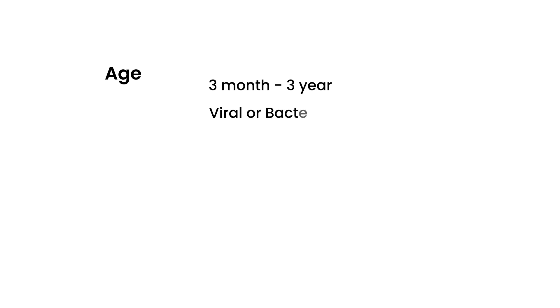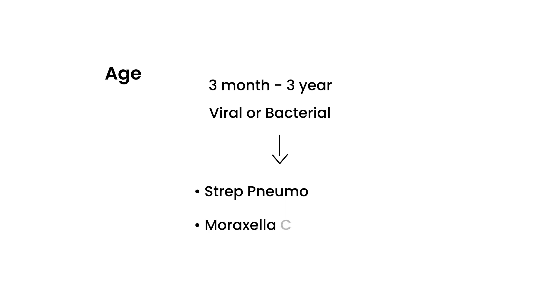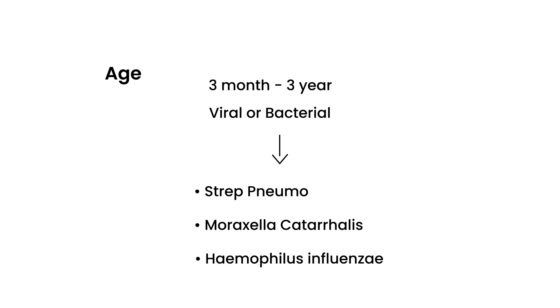In terms of age, the clinical vignettes usually talk about a child that's between three months and three years of age, and the etiology can be either viral or bacterial. The bacterial causes most commonly are three: Streptococcus pneumoniae, Moraxella catarrhalis, and Haemophilus influenzae — and those are the three big players.